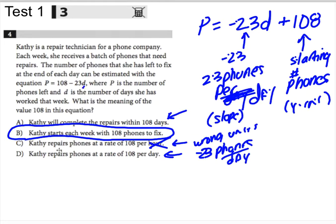If you plugged in starts each week, well, that would mean day zero. Well, if you plug in day zero, sure enough, you get 108 and that jives with what we saw, which is that at the start of each week, she starts with 108 phones.